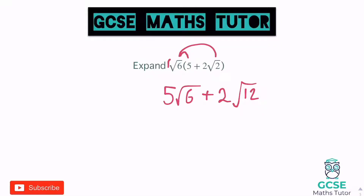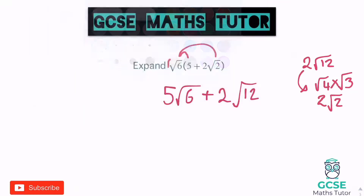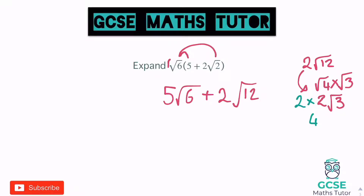We need to check — does this simplify? Yes, 2√12 does simplify because √12 is √4 times √3. I'm going to simplify 2√12 to the side: √12 is √4 times √3, which is 2√3. And we've got 2 lots of that, so 2 lots of 2√3, which is 4 lots of √3, giving us 4√3. So our final answer is 5√6 plus 4√3. Neither of these combine, so that is our final answer.